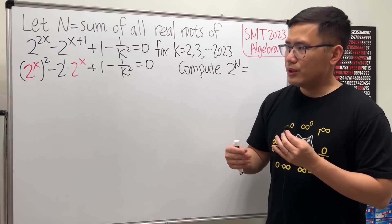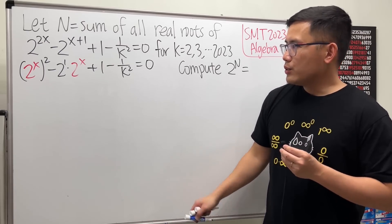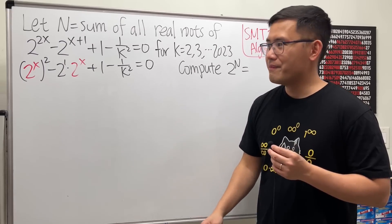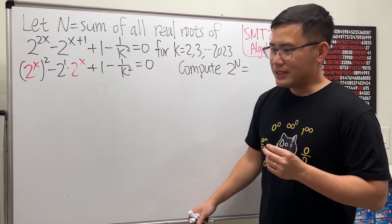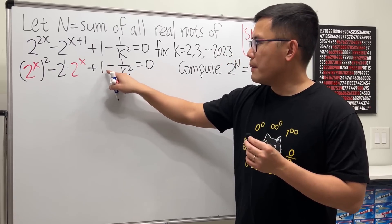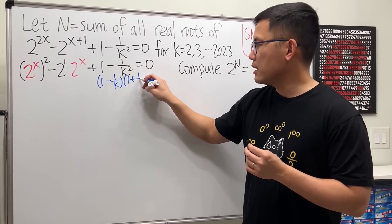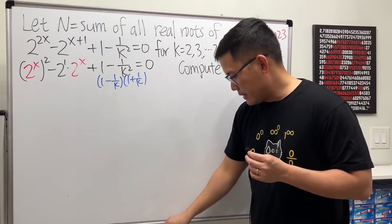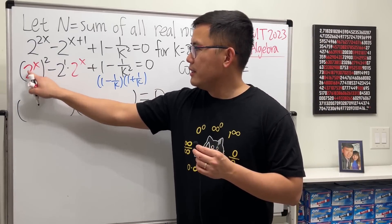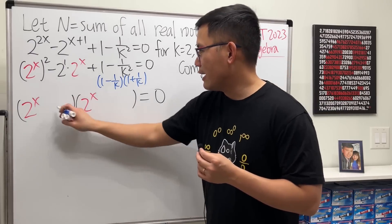You can go ahead and do a substitution to make it look like a standard quadratic. We can solve this quadratic equation using the quadratic formula, but this is actually factorable. I saw the solution — that's how I know it's factorable. At first I used the quadratic formula, which is not so bad, but factoring is cleaner. The constant term 1 minus 1 over k squared can be written as (1 minus 1/k)(1 plus 1/k) — that's just the difference of two squares. Then I need (2^x)(2^x) for the leading term.